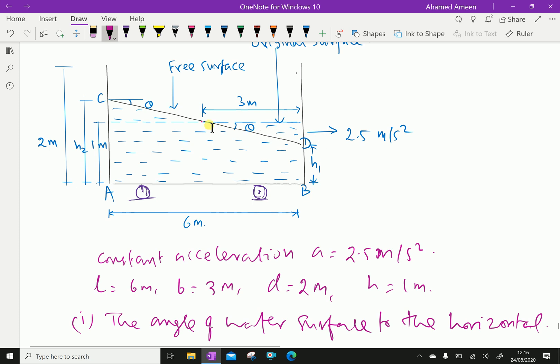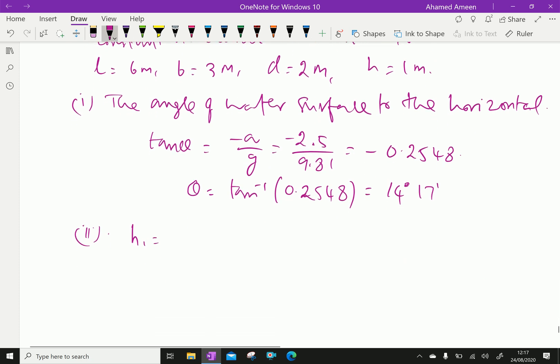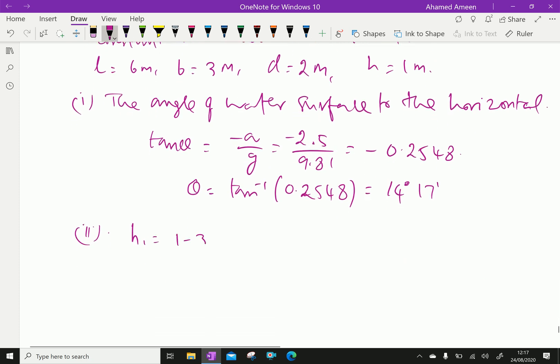From center to here is 3 meters. So we can get H1 equals 1 minus 3 into 0.2548, which equals 0.2356 meters. That is the lower height.